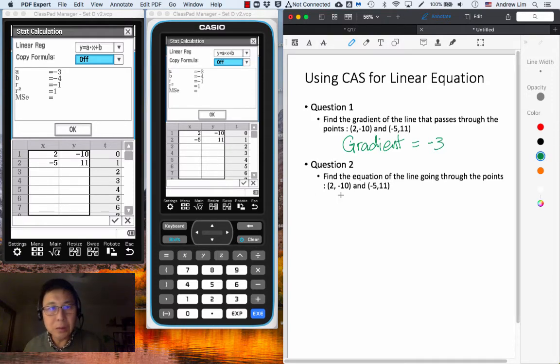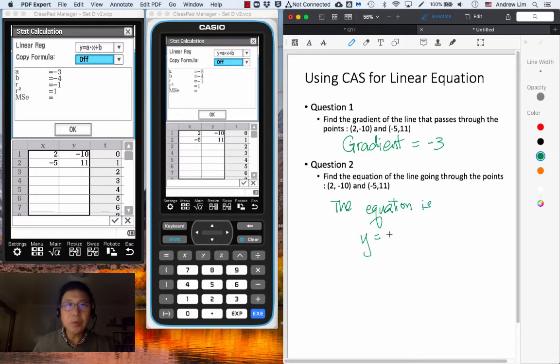So now we have found the gradient, and we can find the lines as well from here. So y is equals to ax plus b. So we say the equation is y equals to a, a is minus 3, oops, minus 3, x plus